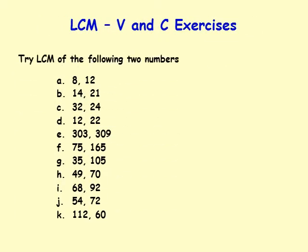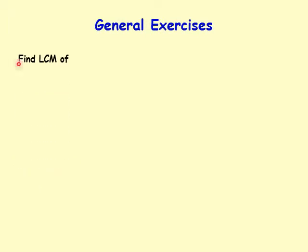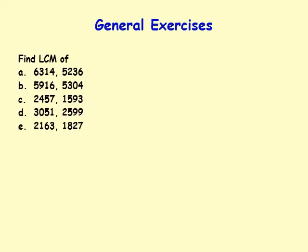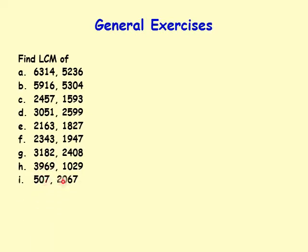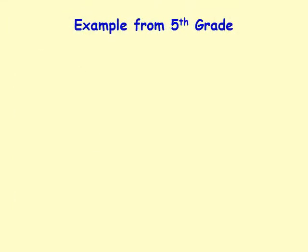Here are some exercises to find LCM of two numbers: 6 and 14, 52 and 36, 59 and 16, 53 and 04, 24 and 57, 15 and 93, 30 and 51, 25 and 99, 21 and 63, 18 and 27, 23 and 43, 19 and 47, 31 and 82, 24 and 82, 39 and 69, 10 and 29, 5 and 7, 20 and 67. If you find them too complicated, just skip them. And 74, 33 and 761, 28, 82 and 1474.